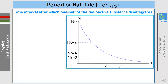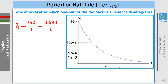The half-life, or period, is the time interval after which one half of the radioactive substance disintegrates. Starting with N₀, after one half-life we have N₀/2 remaining; after two half-lives, N₀/4; after three half-lives, N₀/8; and so on. The decay constant lambda is defined as ln(2) divided by T, where T is the half-life.